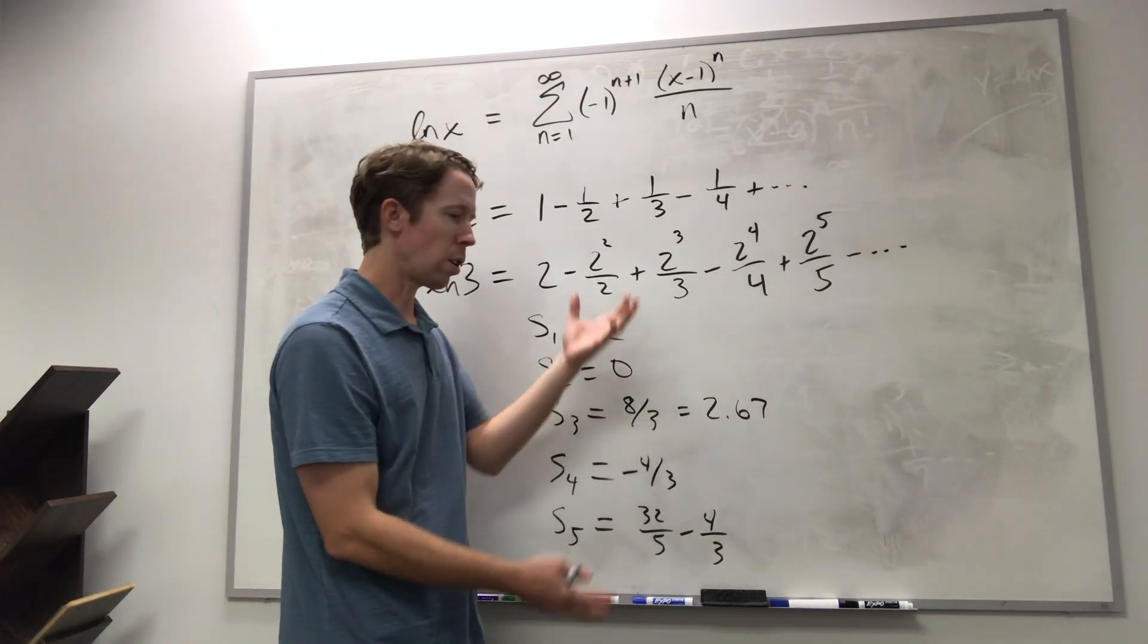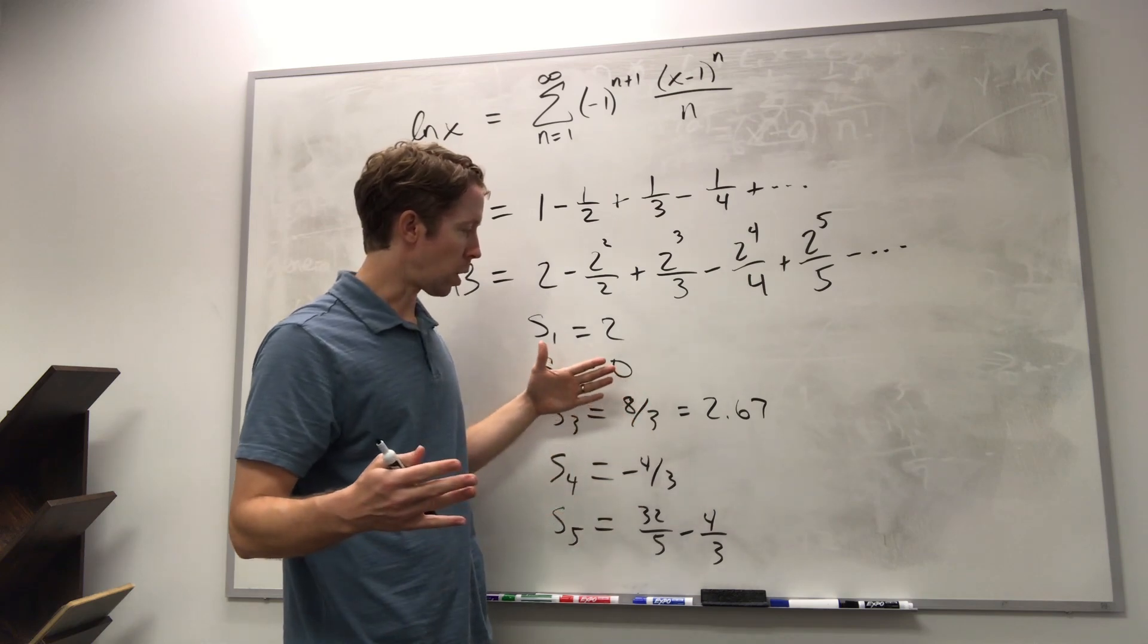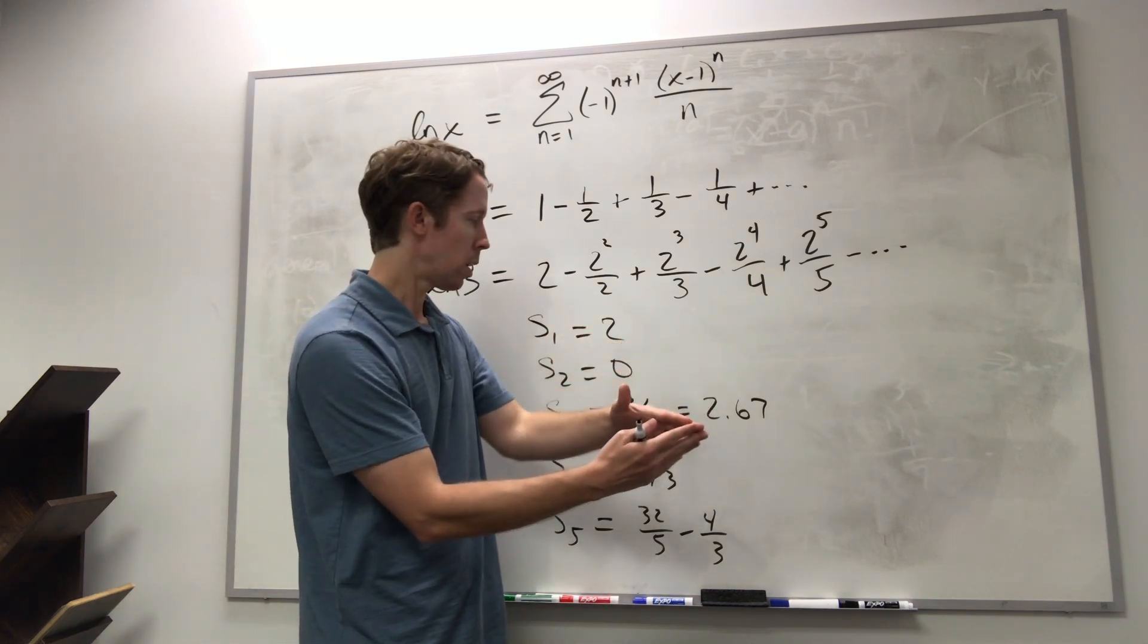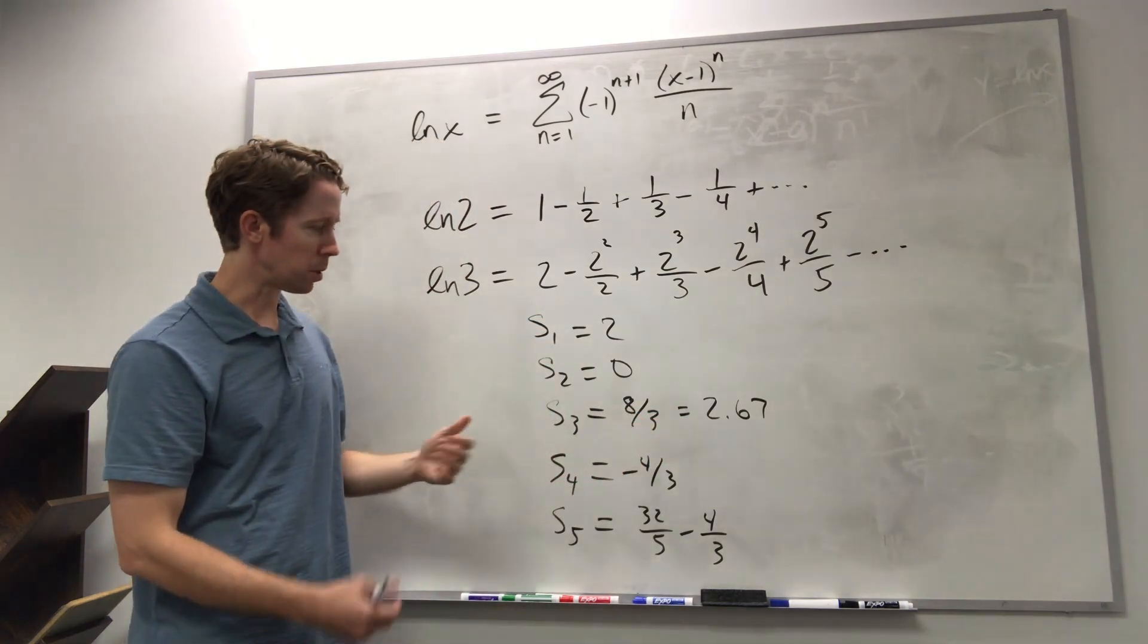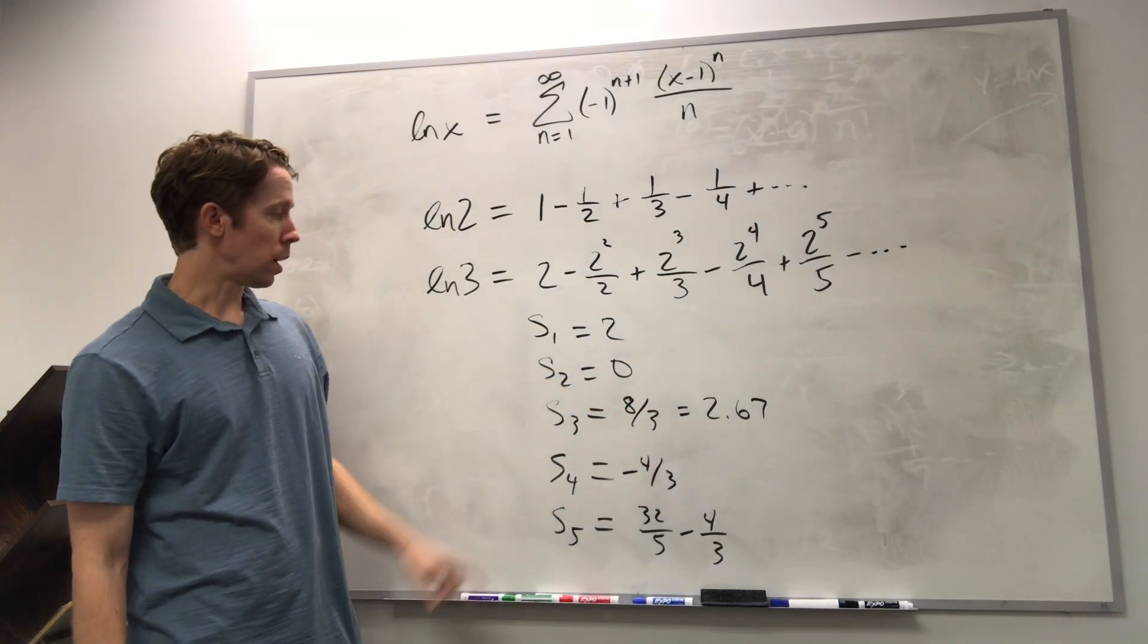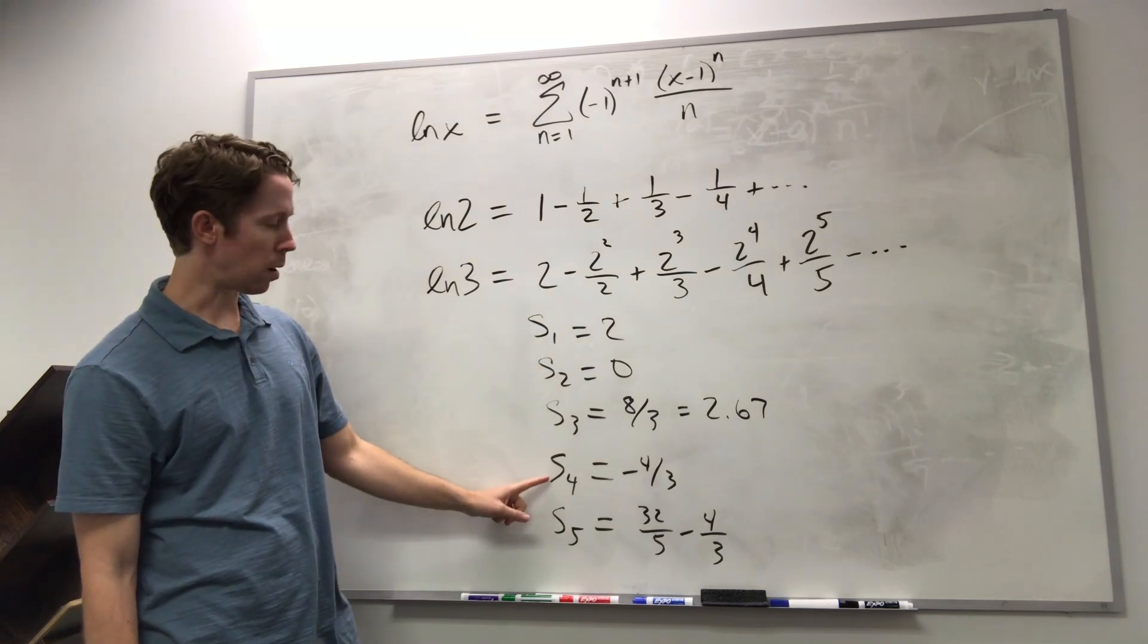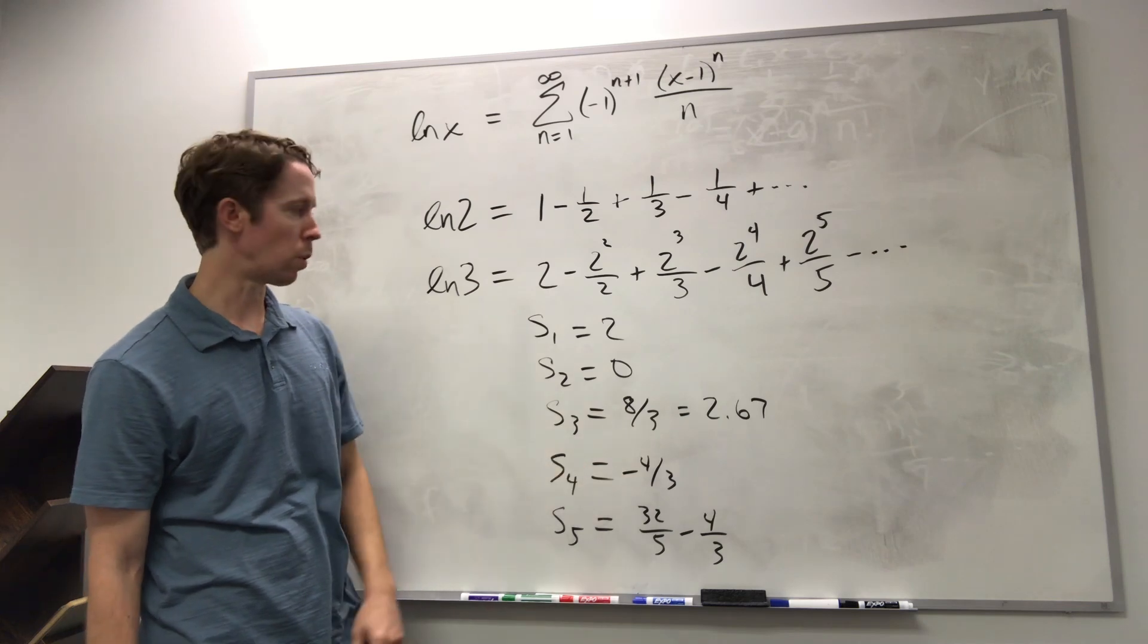And notice that this eight-thirds is bigger than two. So even though you're adding and subtracting and adding and subtracting, the combination of those numbers is not converging to a finite number. The absolute value of these sums is kind of going wild. I believe this will just keep growing and growing. These odd-numbered partial sums, and we may see the same pattern for the even-numbered partial sums. They may keep growing in absolute value as well.